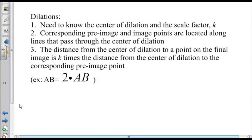Corresponding pre-image and image points are located along lines that pass through the center of dilation. The distance from the center of dilation to a point on the final image is K times the distance from the center of dilation to the corresponding pre-image point. For example, if I measure a line segment in the pre-image AB and the scale factor K is 2, then my final image should have a length of two times the original length or two times AB.